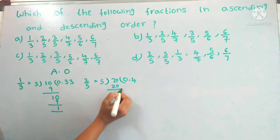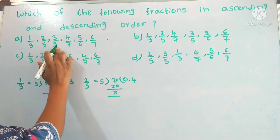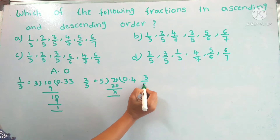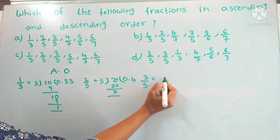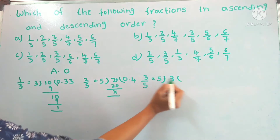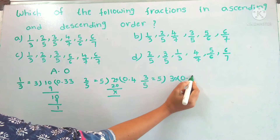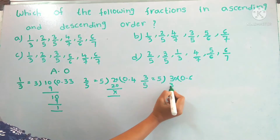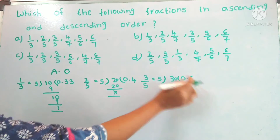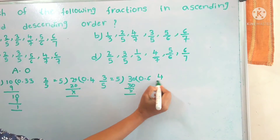Now let's take the third fraction: 3 by 5. Let's do the division — the remainder is zero. So 3 by 5 equals 0.6.